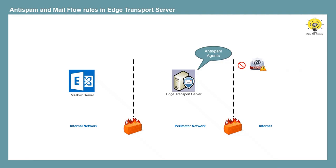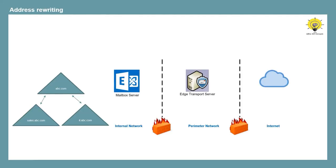Moreover, you can create and configure transport rules or mail flow rules on the Edge Transport Server. Mail flow rules on Edge Transport servers are used to control the flow of emails. In Edge Transport Server, you can manage anti-spam agents and mail flow rules only from PowerShell or Exchange Management Shell. You do not have Exchange Admin Center — everything can be managed only from PowerShell.